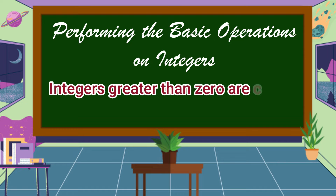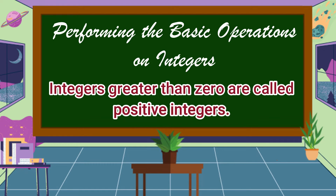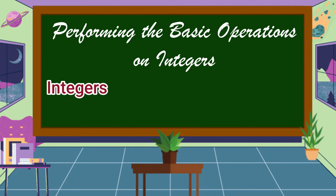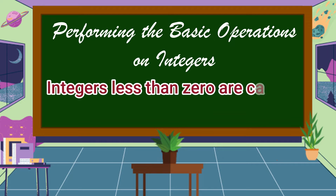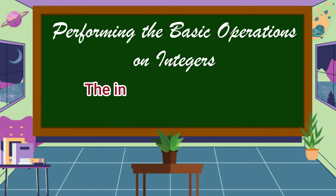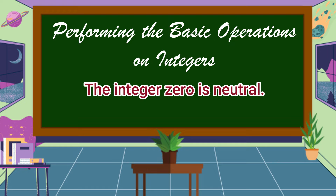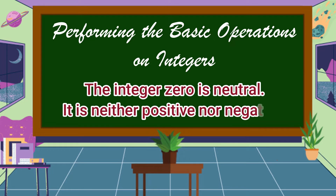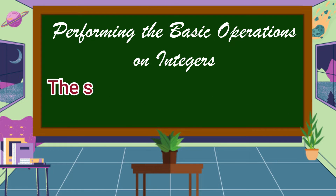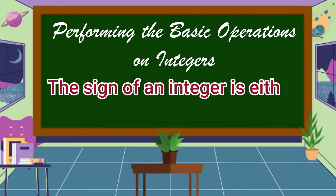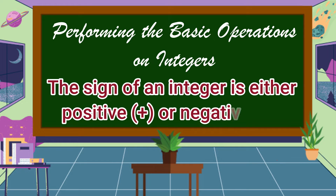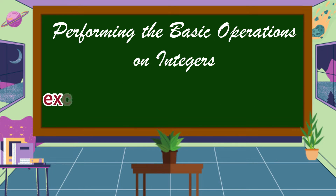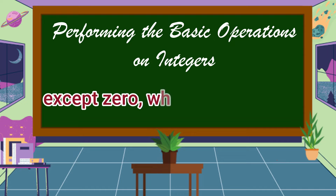Integers greater than zero are called positive integers. Integers less than zero are called negative integers. The integer zero is neutral — it is neither positive nor negative. The sign of an integer is either positive or negative, except zero which has no sign.